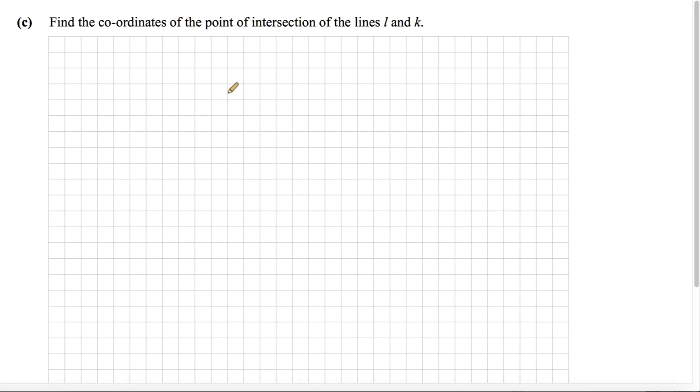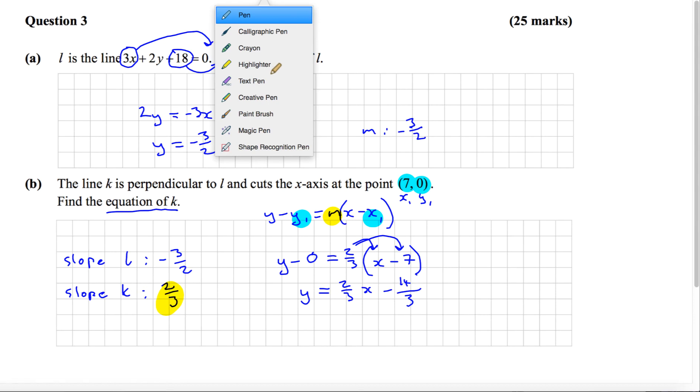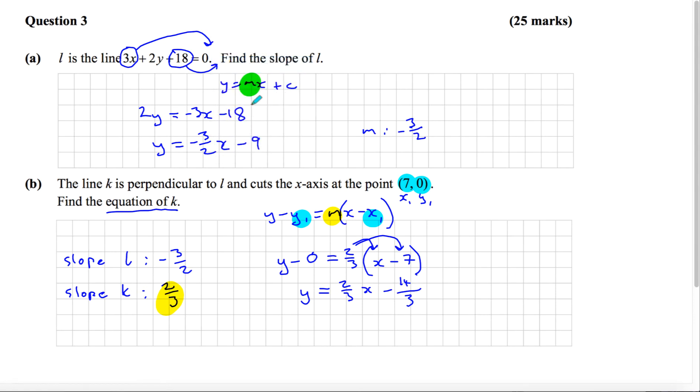Part C says find the coordinates of the point of intersection of the lines l and k. That means we have to do simultaneous equations with both lines. There's a few ways you could do this.